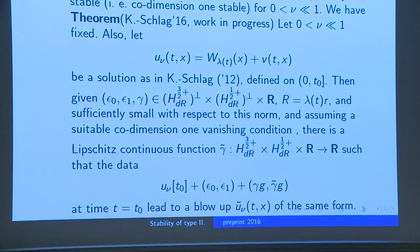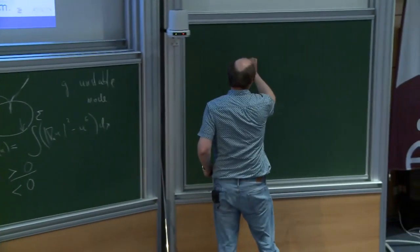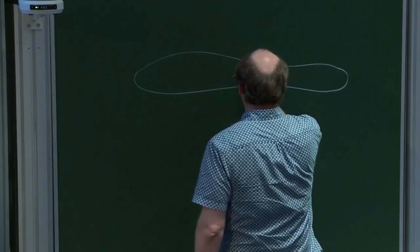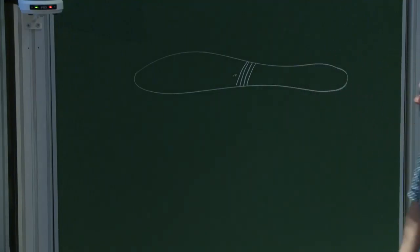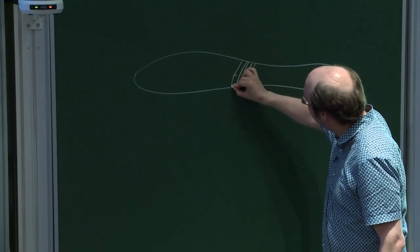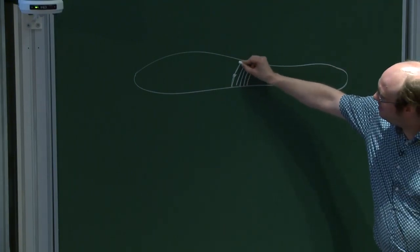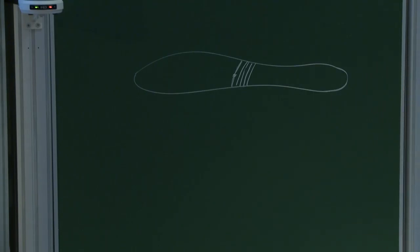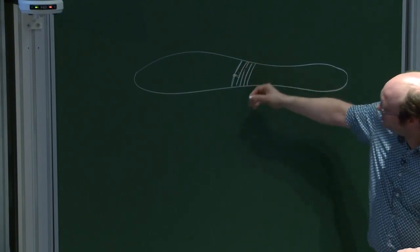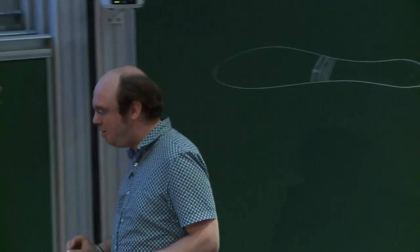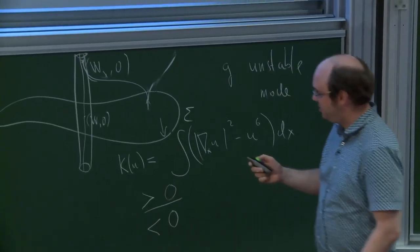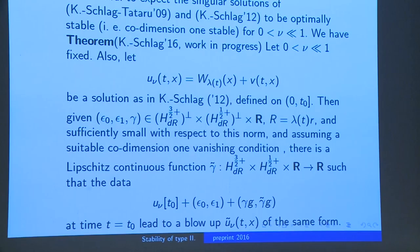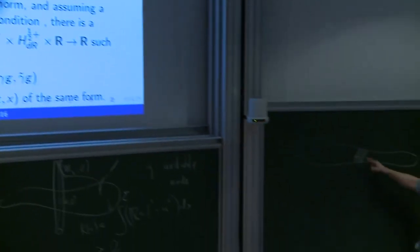Basically, what this means is that in terms of this co-dimension one hypersurface passing through the data of my type 2 solution, you get a sort of foliation. The branch of this foliation going through my actual type 2 solution — the data on this branch will result in the same type of blow-up. Other branches correspond to different types of blow-up. That almost seems to imply stability, since if you perturb you simply fall on a different leaf. But the problem is that the topology has to be strong enough, requiring three-halves derivatives, while ν is very small, so the perturbation is of much higher regularity than the solution.